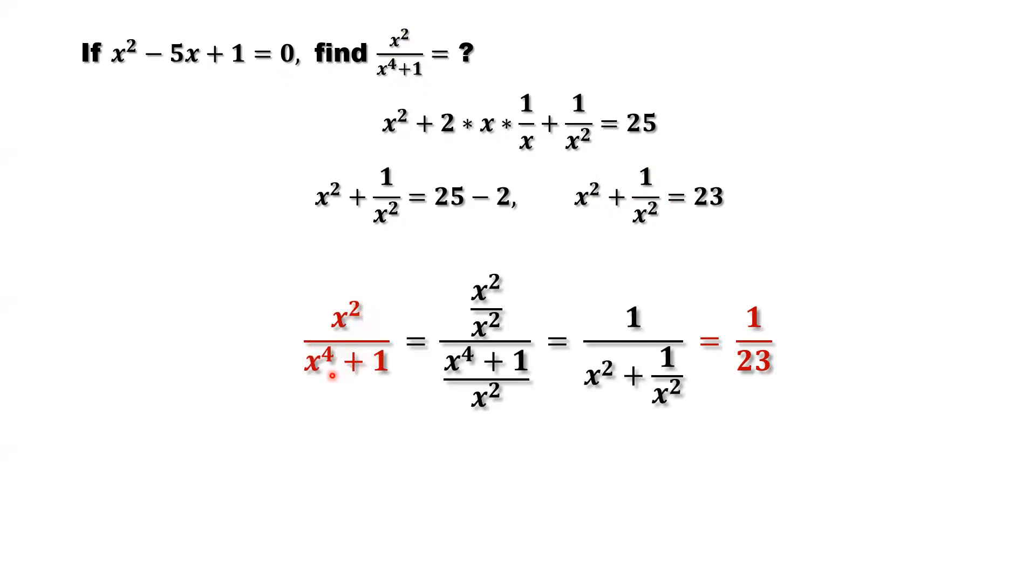x squared over x to the power of 4 plus 1. Both numerator and denominator divided by x squared at the same time. So numerator divided by x squared is 1.